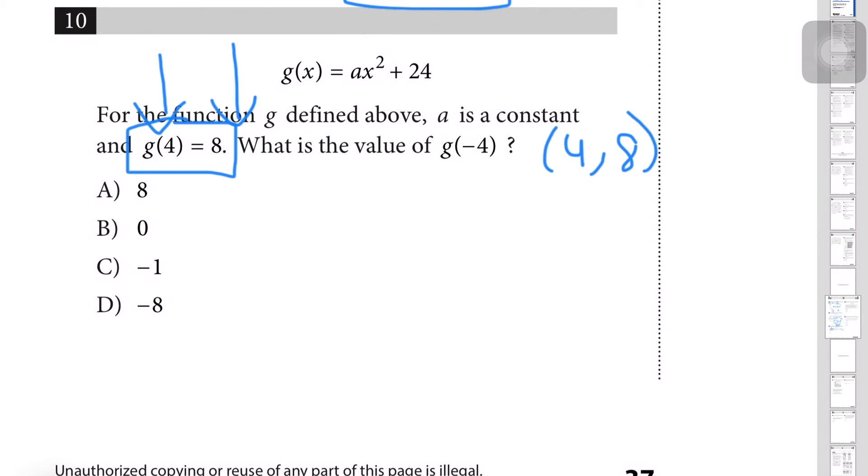We can just substitute that into the original equation: 8 = (since x equals 4) 4² would be 16a + 24. Now you just simplify, bring the 24 to the other side, and that becomes -16 = 16a, and that'll give you a = -1.